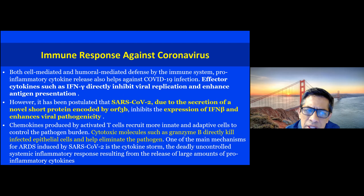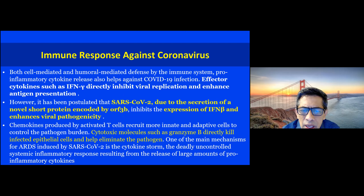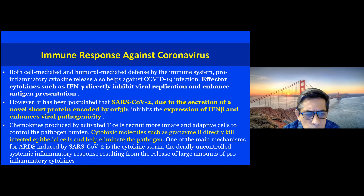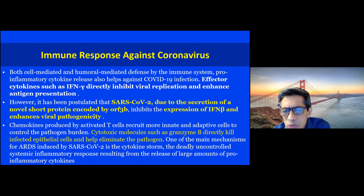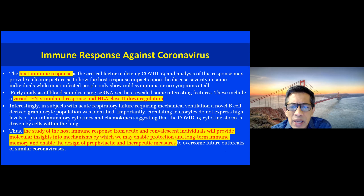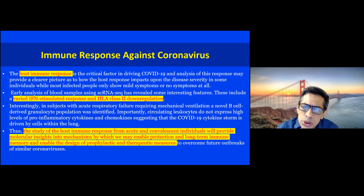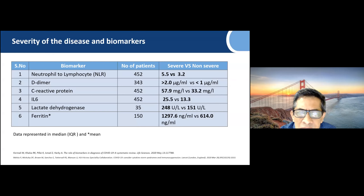It has been postulated that there is secretion of a novel short protein encoded by ORF3b which inhibits the expression of interferon-beta and enhances viral pathogenicity. Chemokine-producing activated T cells make cytotoxic molecules like granzyme B, which directly kill epithelial cells and eliminate pathogens. We are understanding better and better about the immune response — the host immune response has a varied interferon-stimulated response tied to HLA class 2 downregulation.